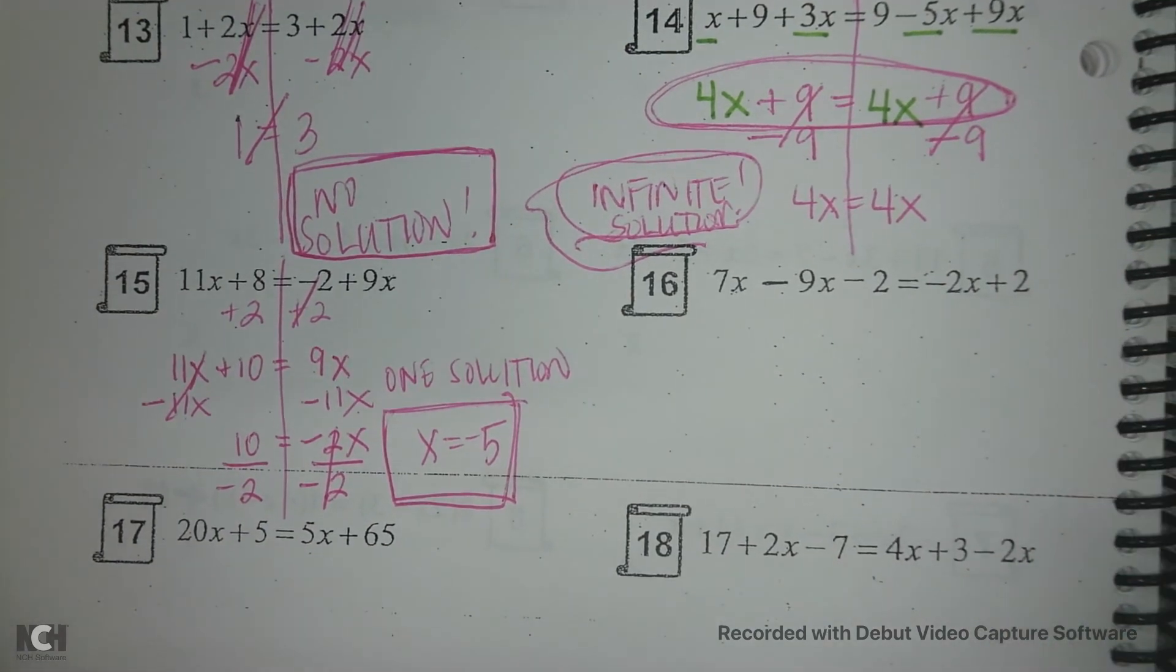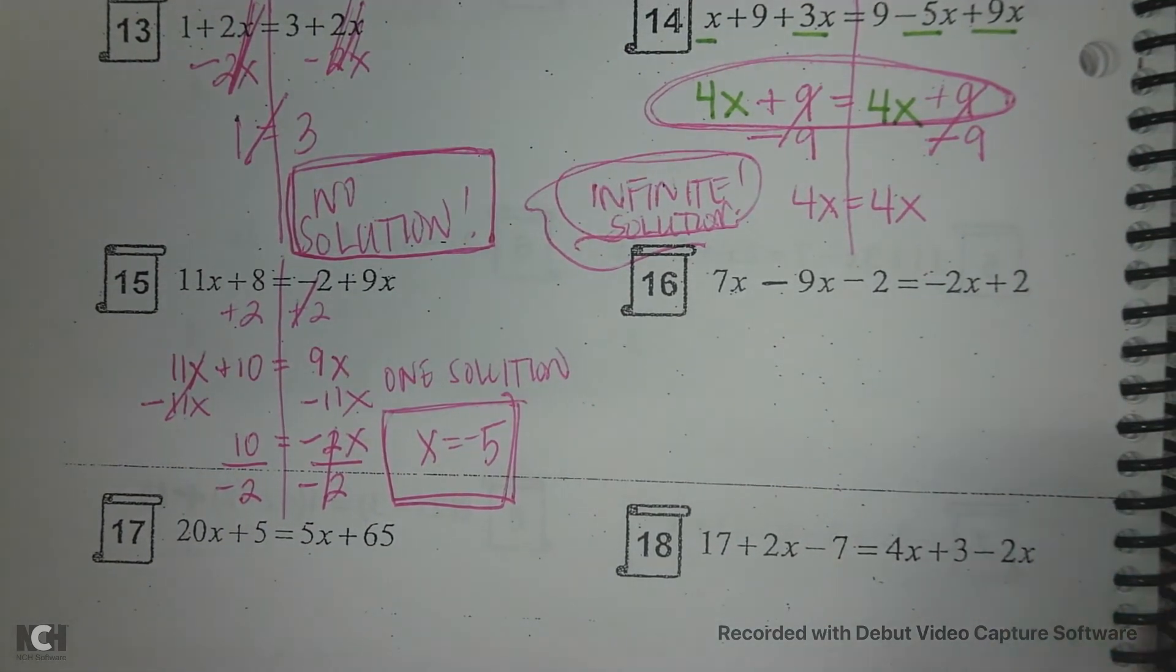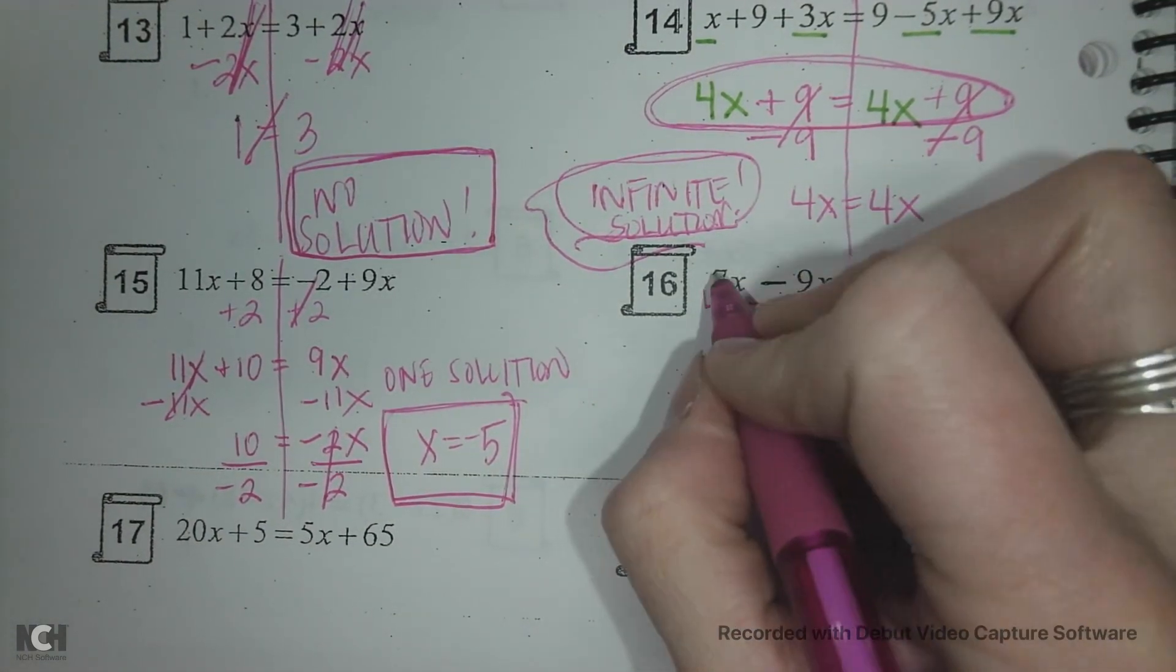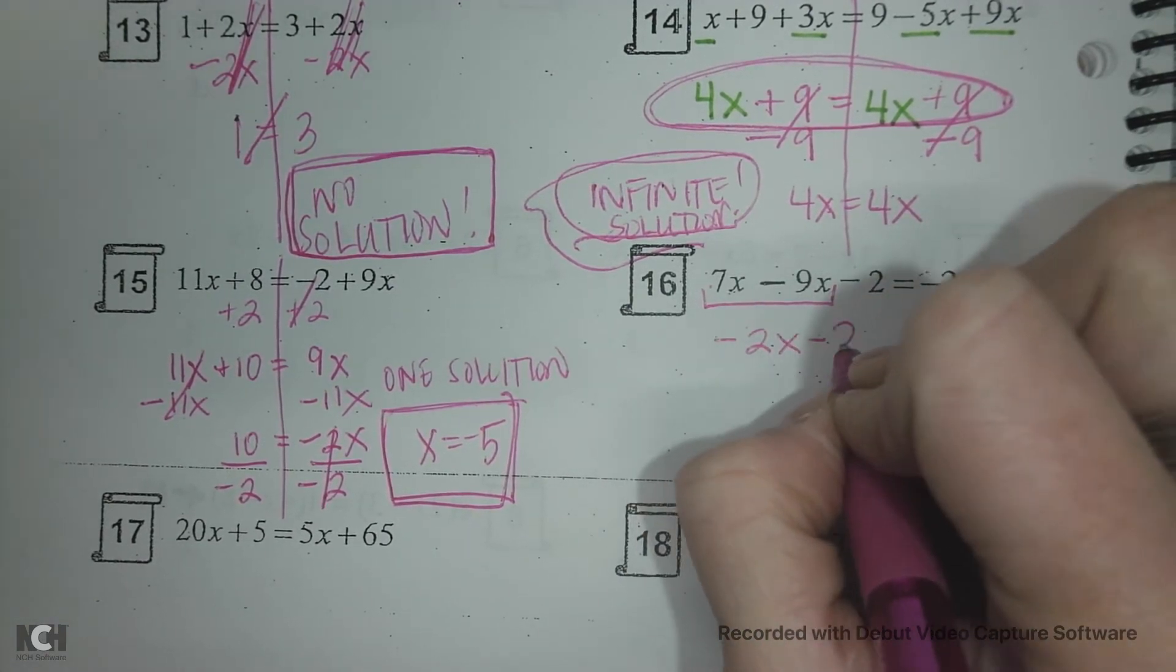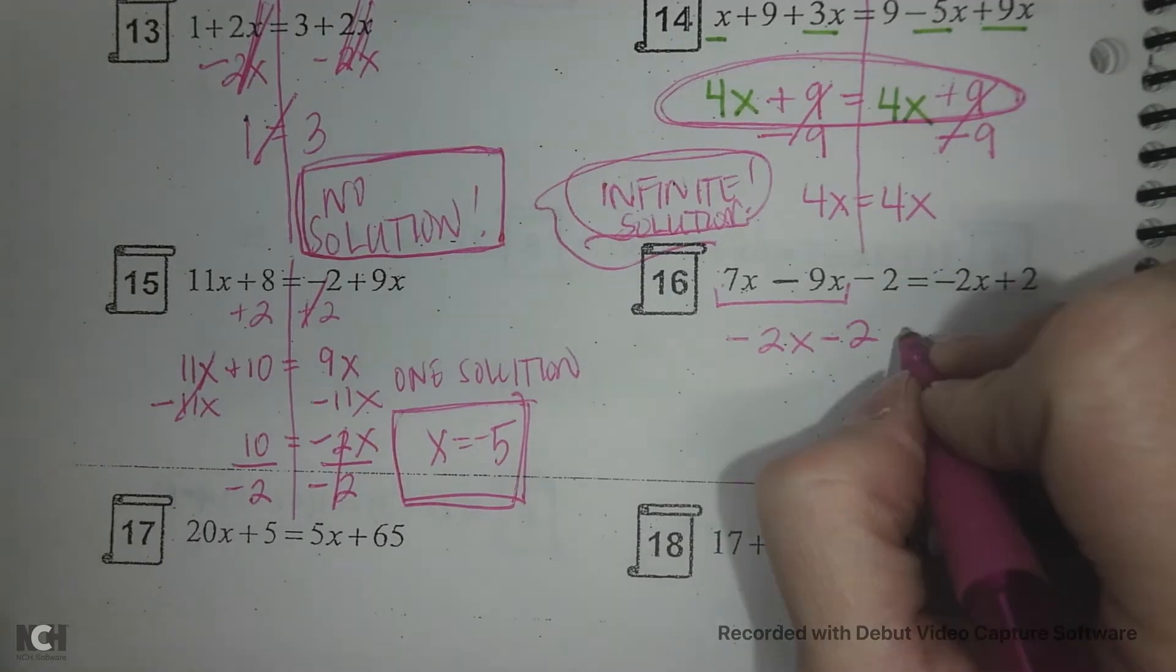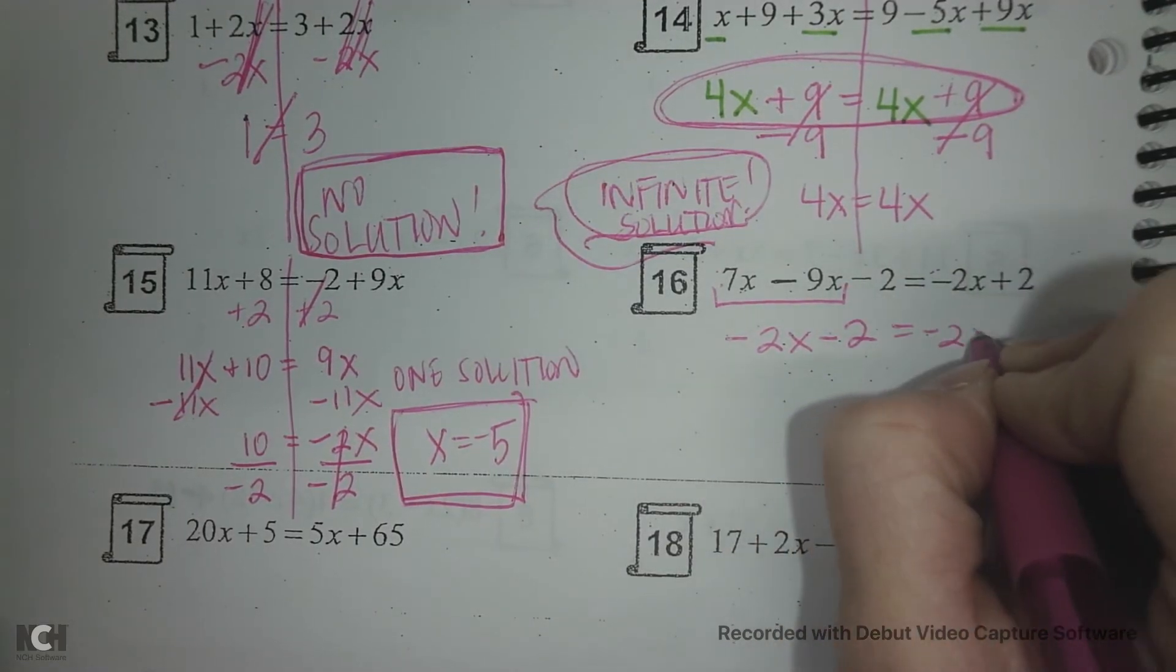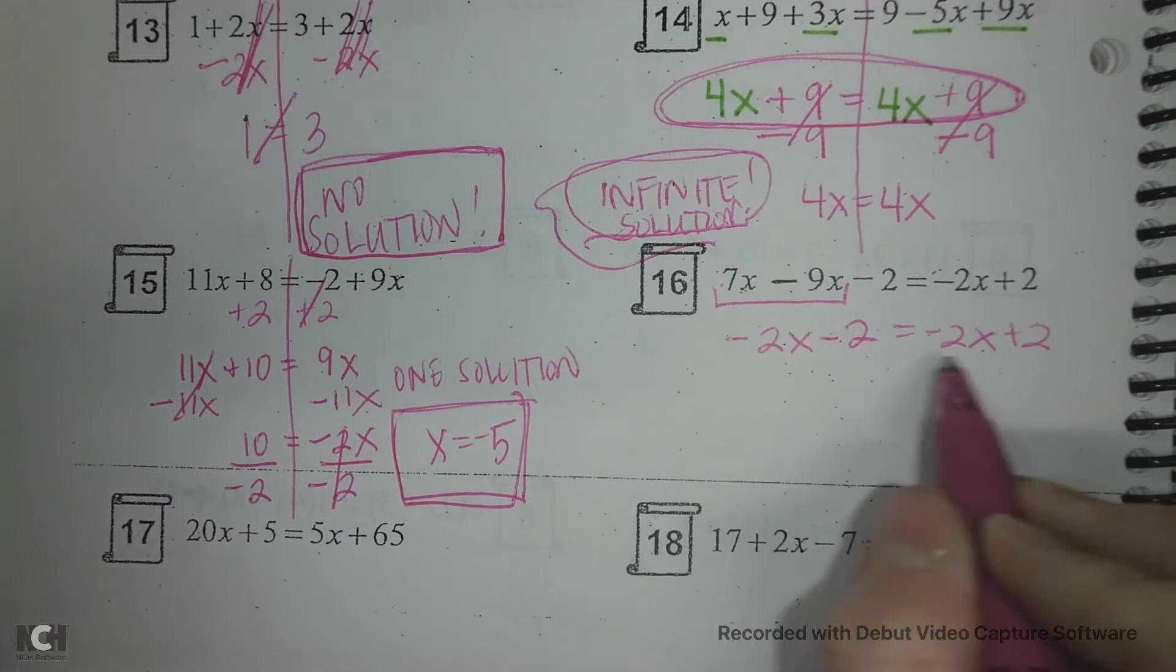Okay. Let's look at 16. That's our last example. We're going to combine our like terms. 7x minus 9x's is negative 2x minus 2. Hold on. Okay. And then on the right hand side we have negative 2x plus 2. So we could stop here.